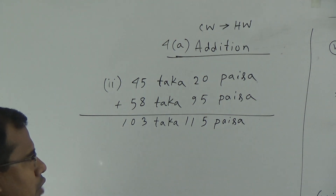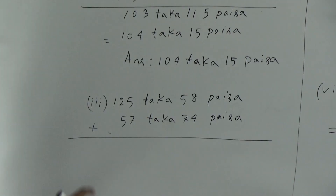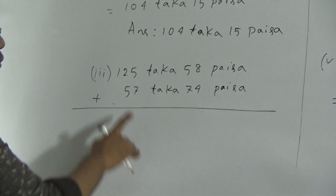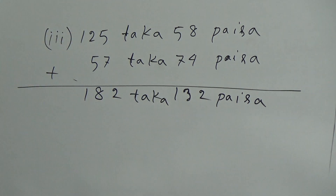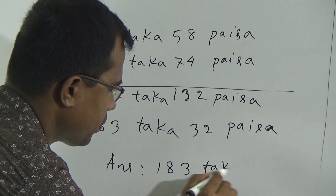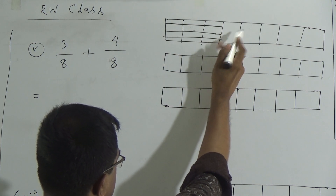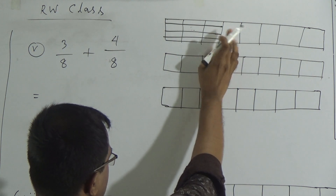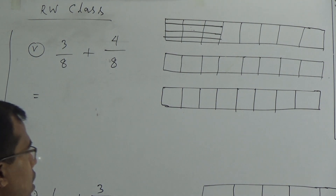That means 115 poisha. Now we will add the taka part: 4 plus 5 plus 8 is equal to 13. From 13 we will write 3 and carry 1. Now 1 plus 4 is equal to 10, that means 103 taka and 115 poisha. But dear students, you know that 100 poisha is equal to 1 taka, so we will convert 100 poisha into taka.